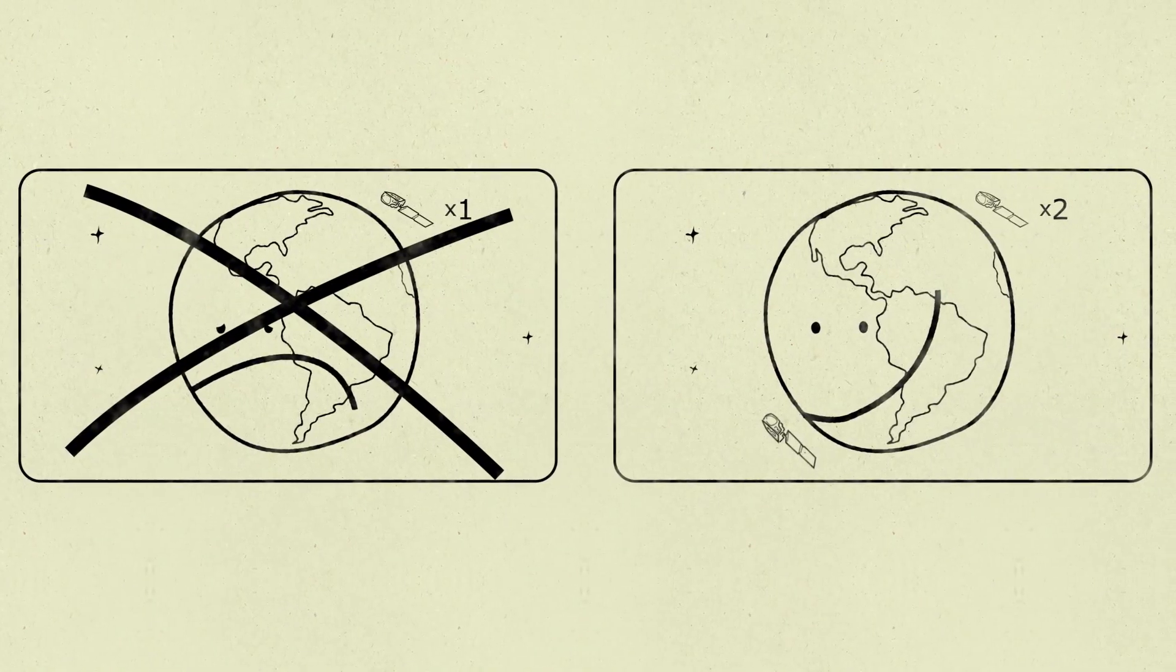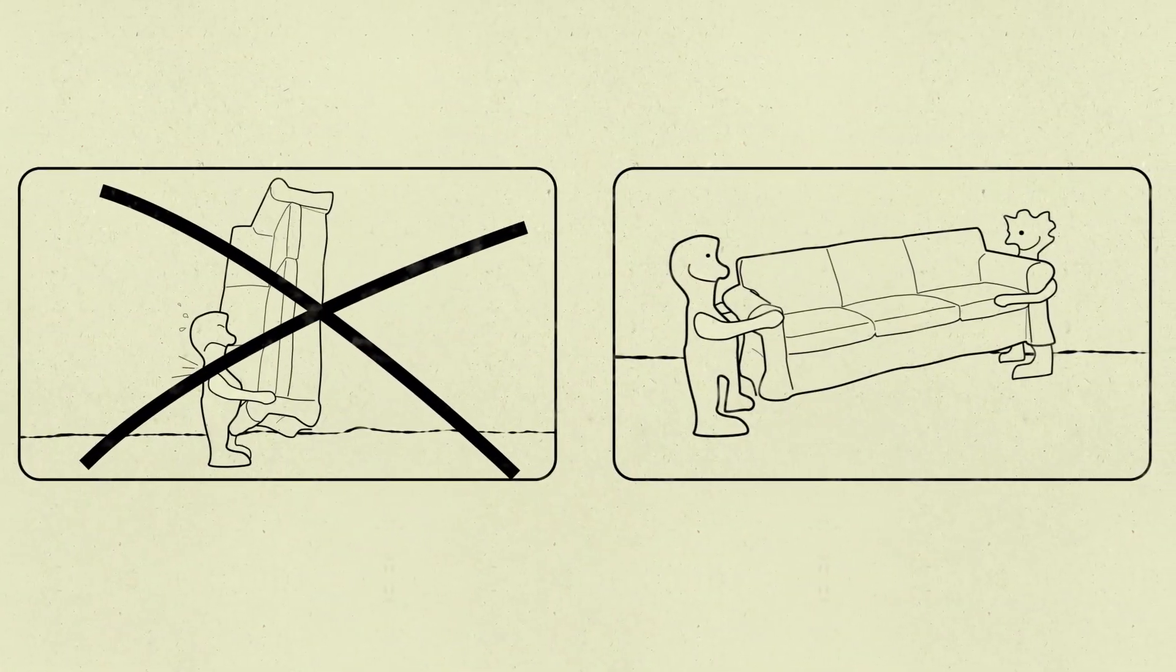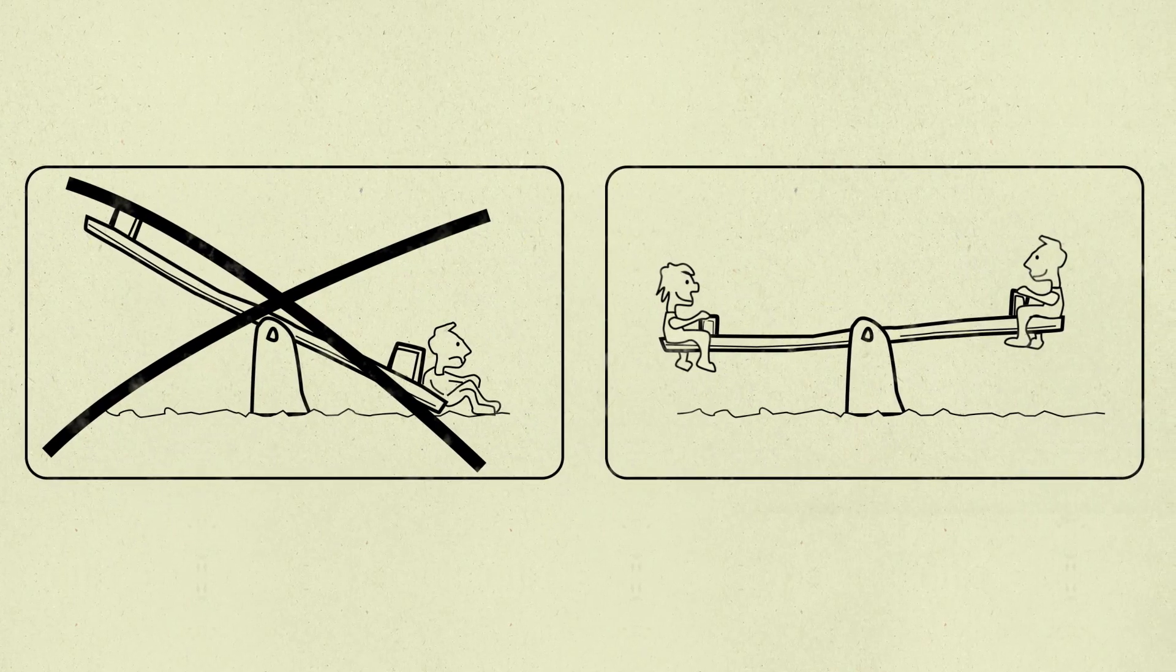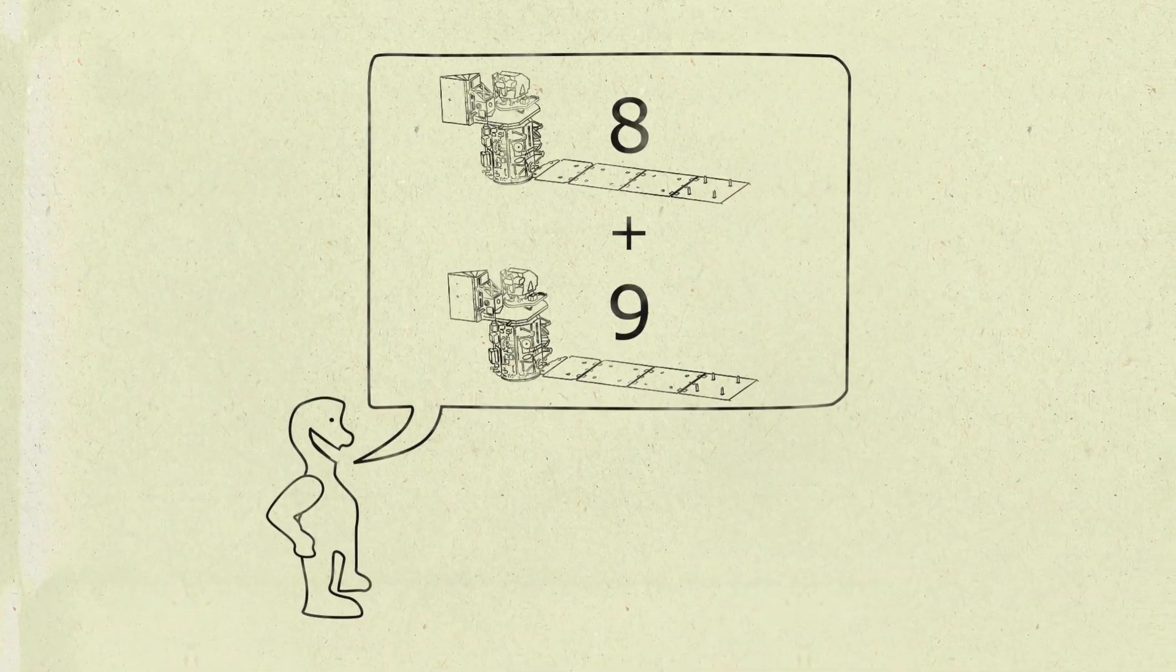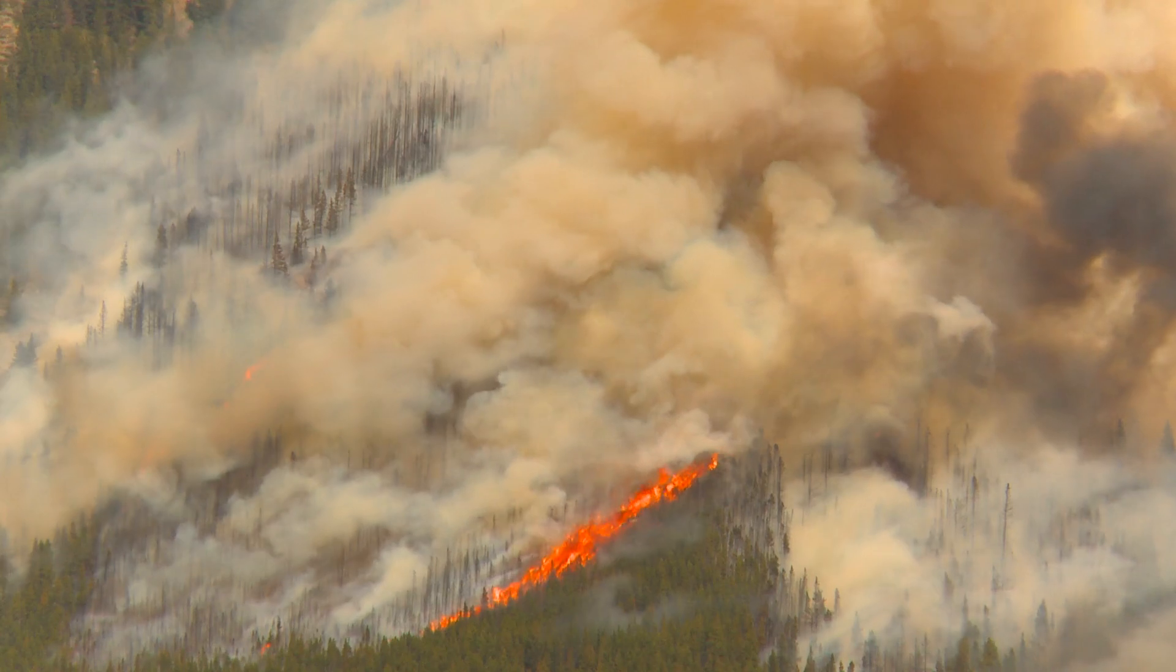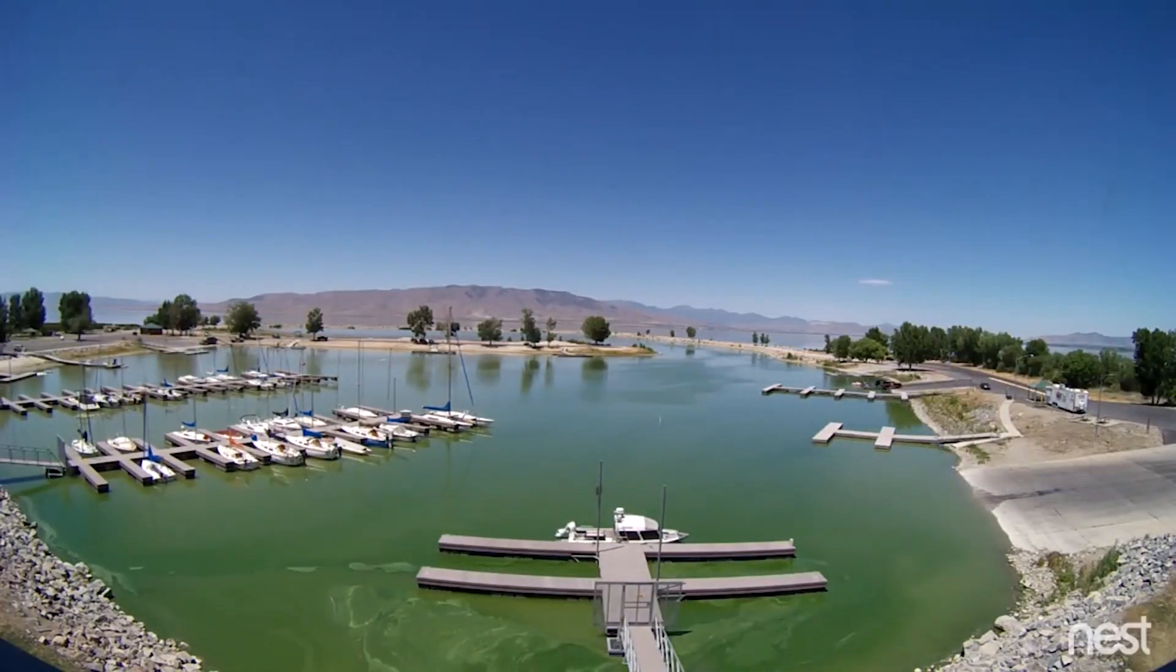In this case, two satellites are better than one. Landsats 8 and 9 can work together to provide near real-time data about what's happening on the surface of our planet.